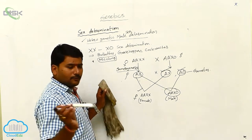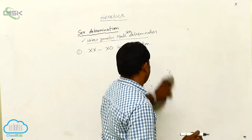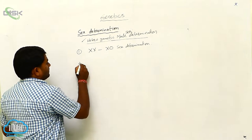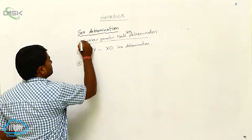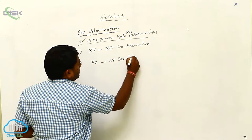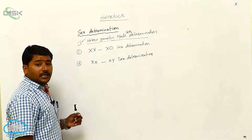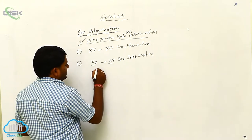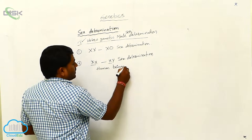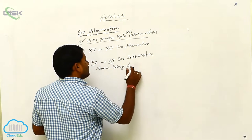There is another type of sex determination — that is the XX/XY type of sex determination, seen in heterogametic males. This kind of sex determination is seen in human beings and Drosophila.